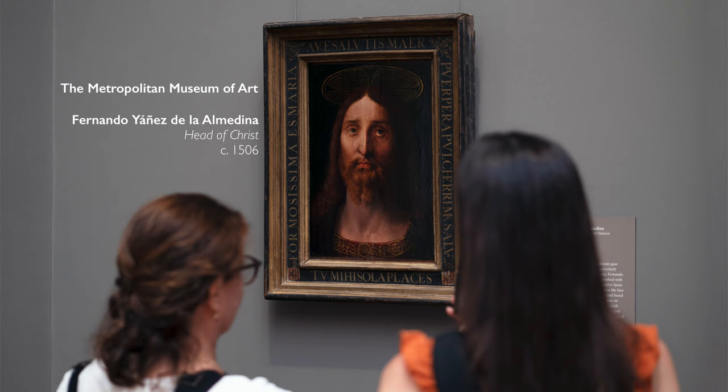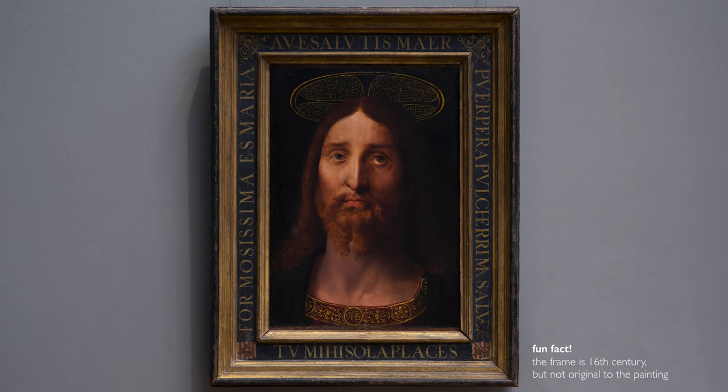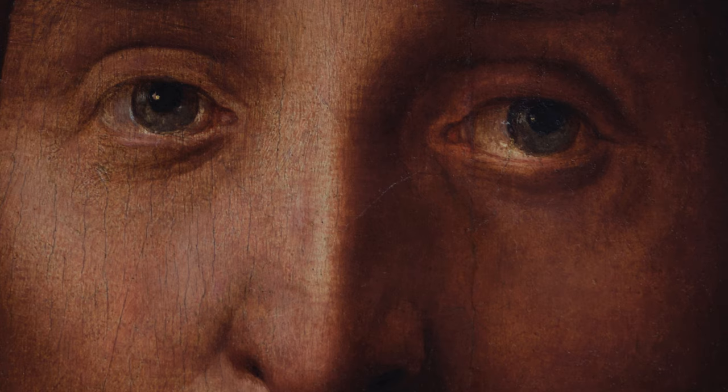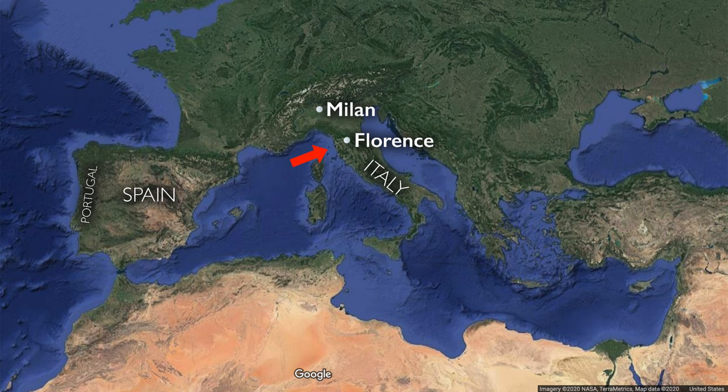We're in the Metropolitan Museum looking at a head of Christ painted by the artist Fernando Llanes de la Almedina. Almedina is such an important Spanish artist at the beginning of the 16th century. One of the reasons he's so important is that he is part of this wave of artists who began to display more influences from the Italian peninsula.